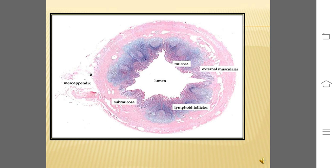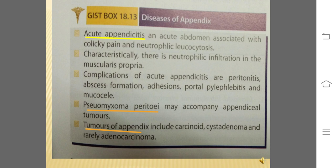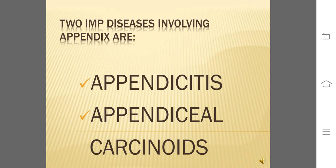As elsewhere in the alimentary tract, the outermost covering of the appendix is serosa. Diseases of the appendix include acute appendicitis and its complications, pseudomyxoma peritonei, tumors of the appendix that is carcinoid, cystadenoma, and rarely adenocarcinoma. The two most important diseases involving the appendix are appendicitis and appendiceal carcinoids.